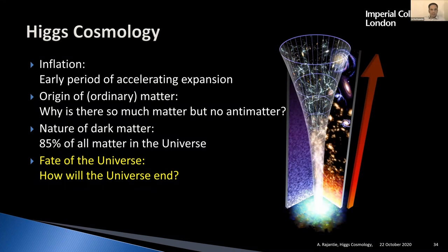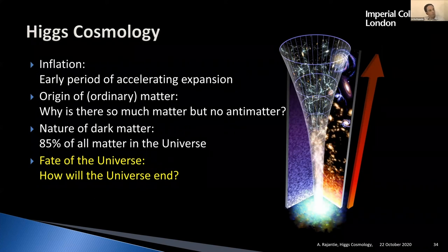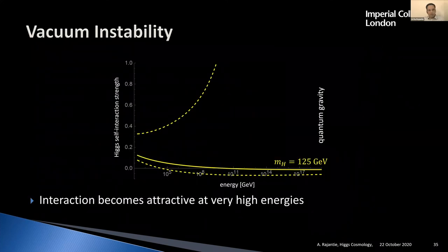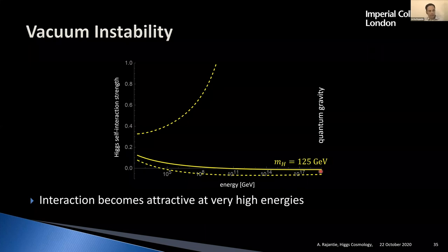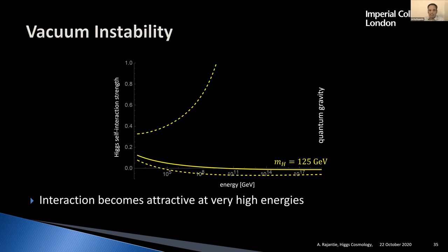As the final topic, I want to say something about the fate of the universe. It connects back to the earlier plots. If you look very carefully at the interaction strength plot, it seems to just go to zero at high energy — but if you look carefully, you can see it goes slightly below zero, which means the Higgs interaction actually becomes attractive. That leads to the potential for vacuum instability.